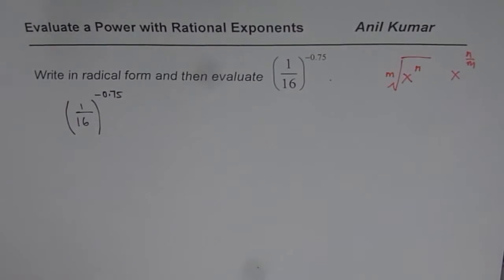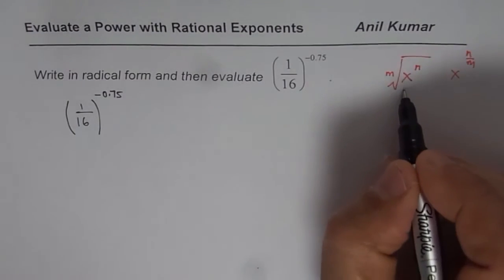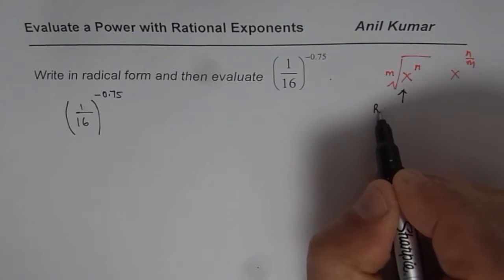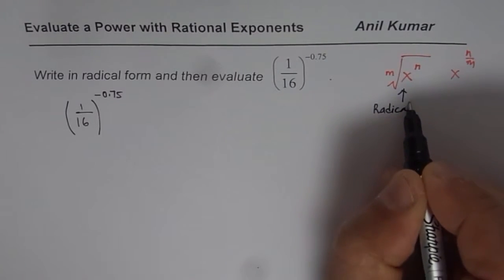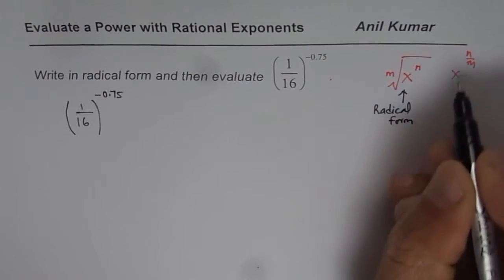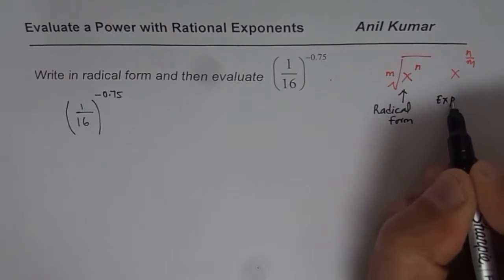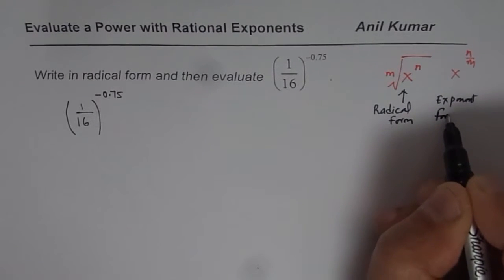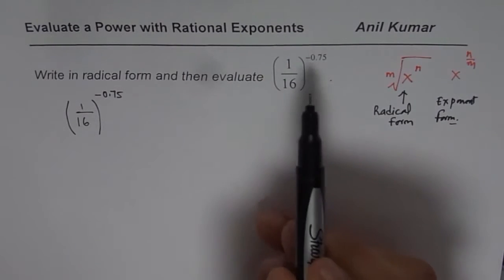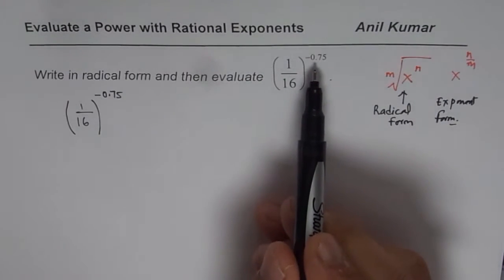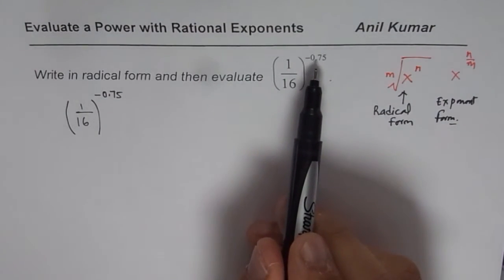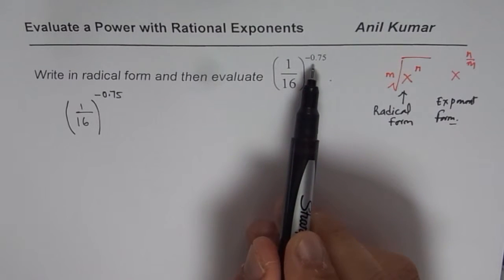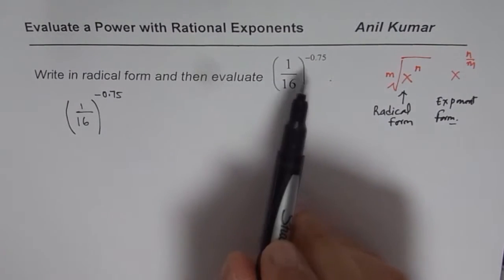That is exponent form. So, we want to write this expression first as radical form. This is radical form. That one is exponent form, but both are same things. In this particular case, we are given a decimal number. So, first step is write that decimal as a rational number.